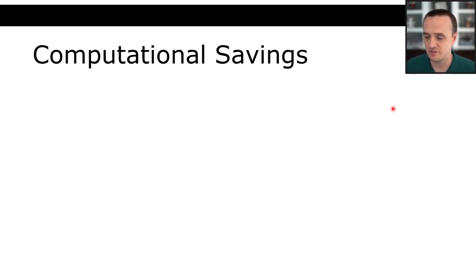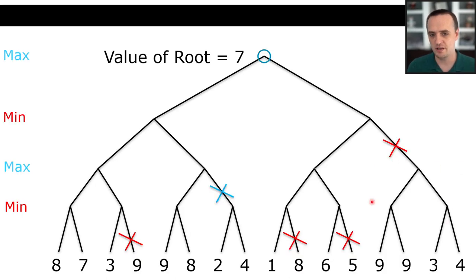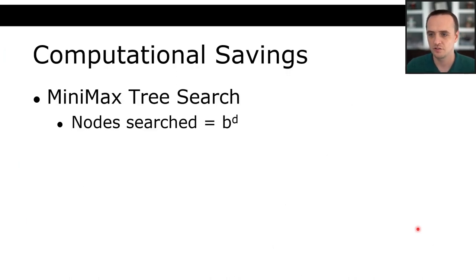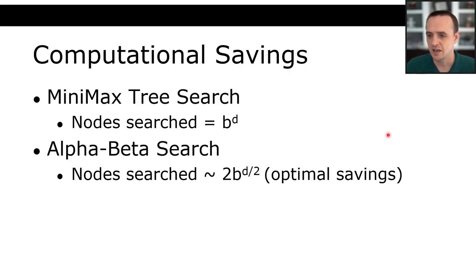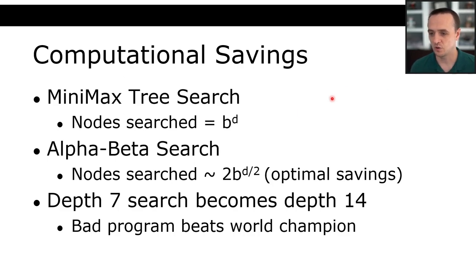The computational savings are substantial. In a minimax search tree the number of nodes searched is B to the power of D. In alpha-beta search it's approximately B to the power of D/2 — effectively the square root of the minimax node count. If you could previously only search to depth seven, with alpha-beta you can now search to approximately depth fourteen. A depth-seven chess program would be quite weak, so these savings are enormously significant in practice.